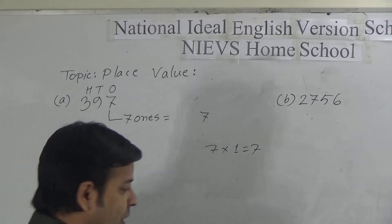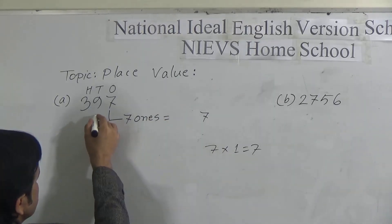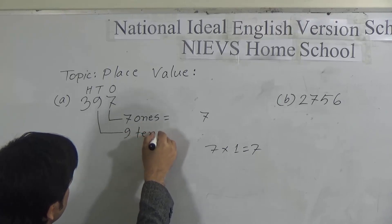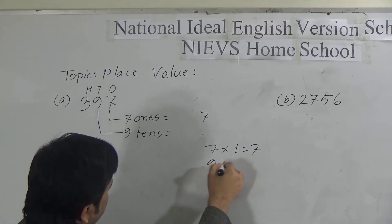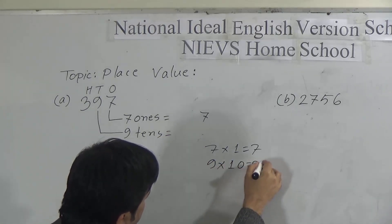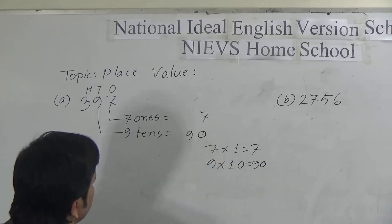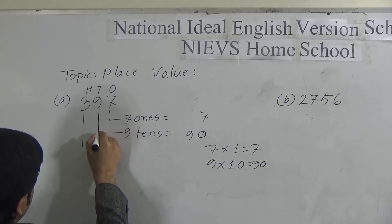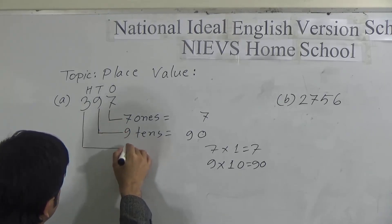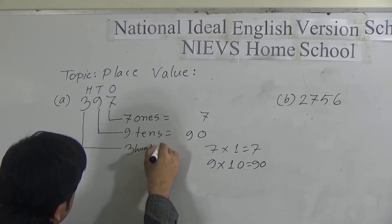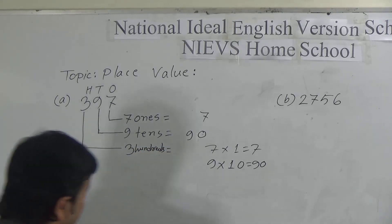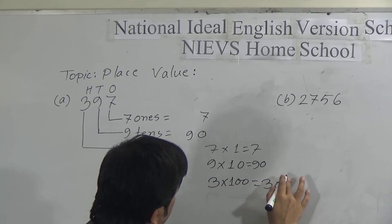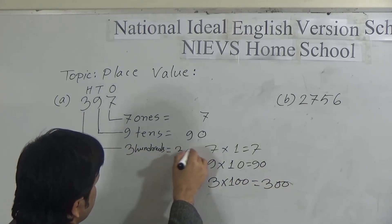Now the next digit, nine — nine is in the tens place, so we write nine tens. Nine tens means we multiply nine by ten, which gives ninety. Next digit is three — three is in the hundreds place, so we write three hundreds. The place value of three in this number is three hundred.